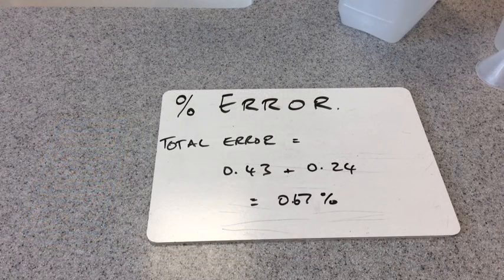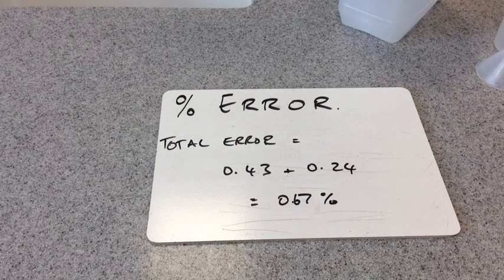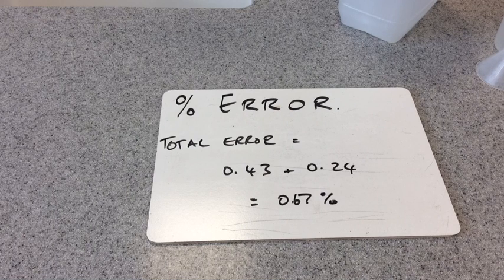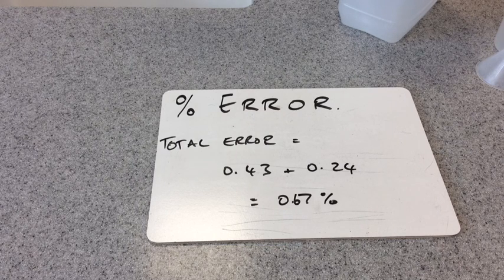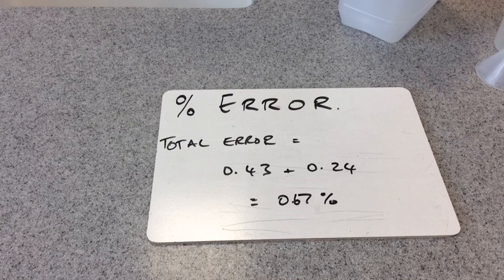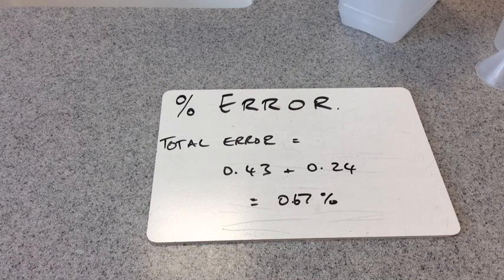Now because they were the only pieces of apparatus that we took any measurements with, our total error is just the sum of those two percentages. So that's coming out at a total percentage error of 0.67%. Obviously if a balance had been involved in the practical then I would have worked out the percentage error in the mass measurement. And that would have obviously had to have been added on to the other errors.